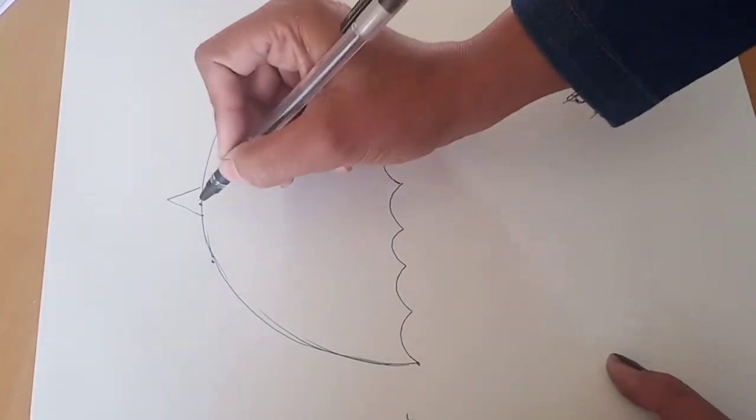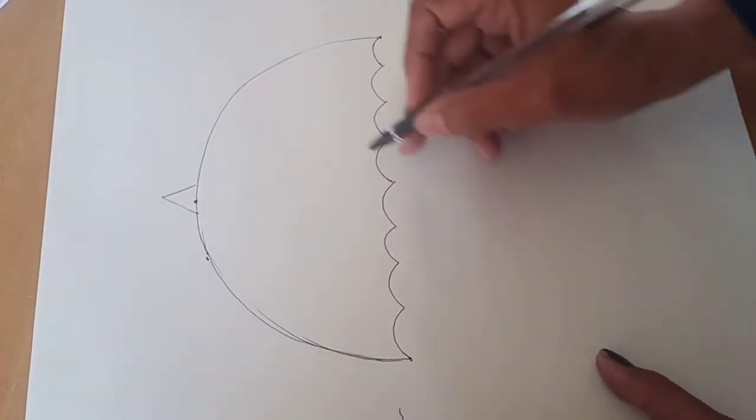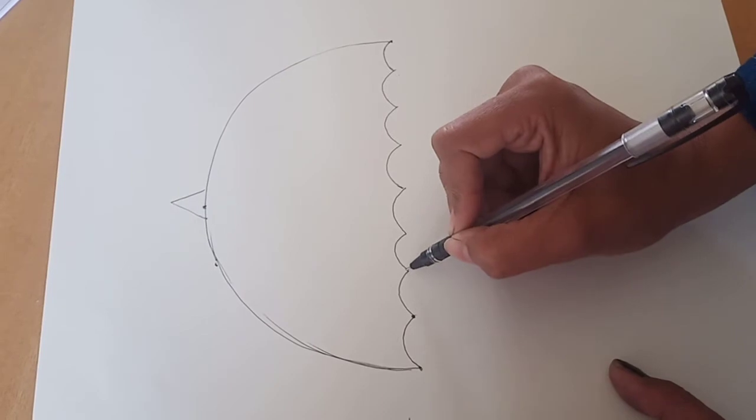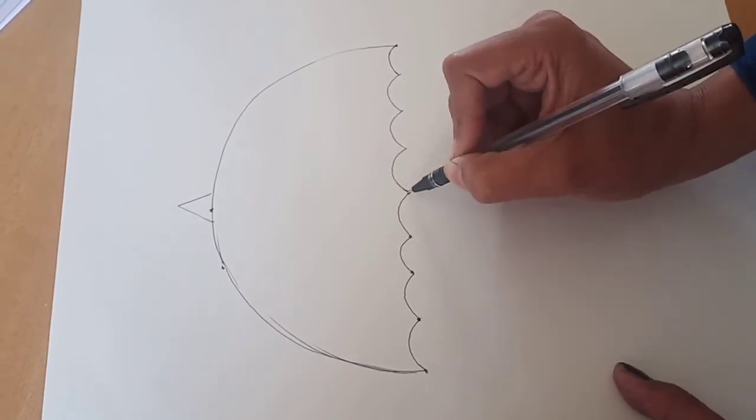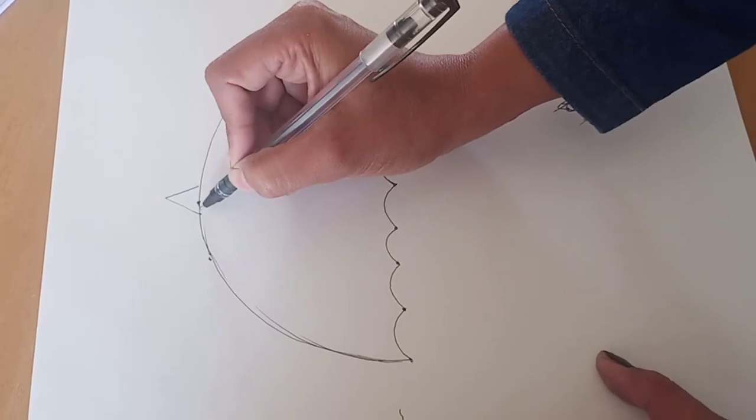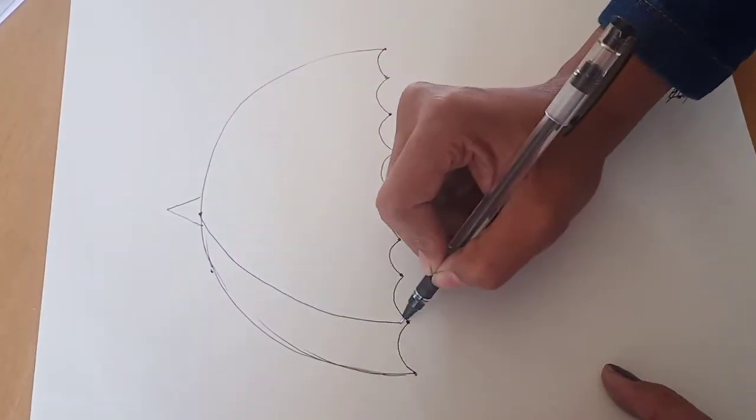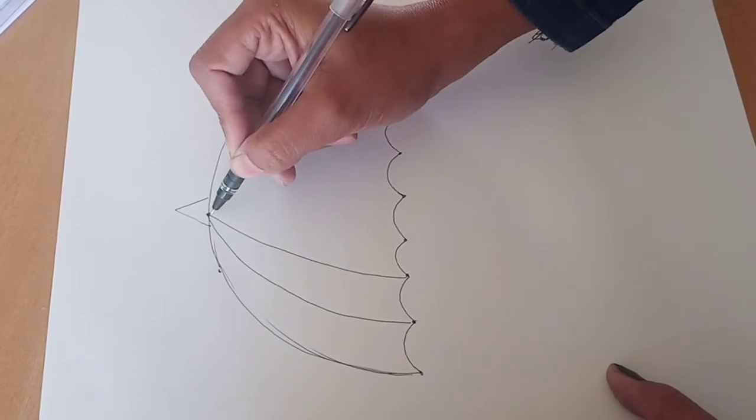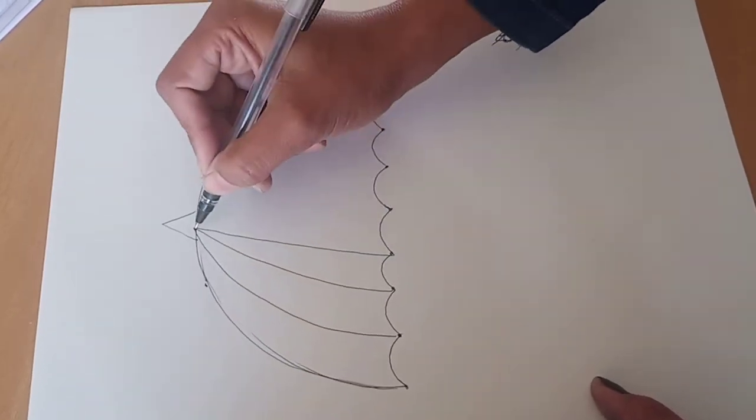Now here you have pointed, right? So here also you have to do the points at the corner, and from this center you have to draw the curve line like this: one, two, then three.